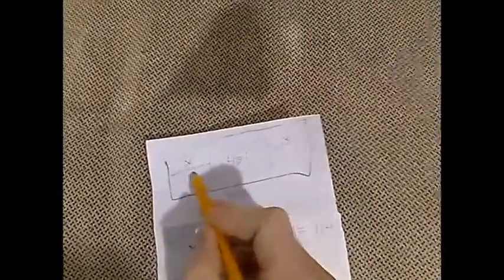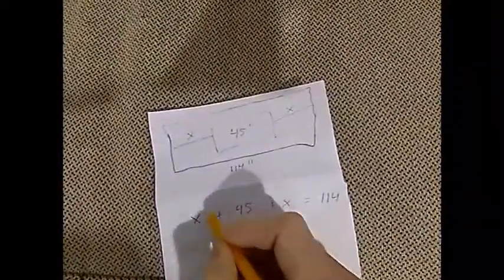You got two X's, so that's going to be 2X plus 45 equals 114. And then you've got to move the 45 over there, make it negative. So it'll be 2X equals—what's 114 minus 45? Let me just check that in my head. 100 plus 14, yeah that should work. Okay, 2X equals 69.